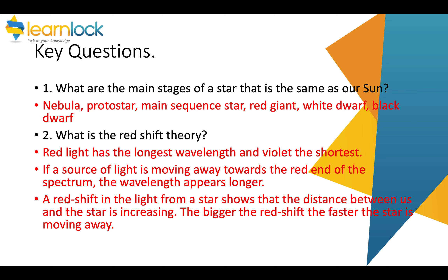What is the red shift theory? Red light has the longest wavelength and violet the shortest — that is in the spectrum. If a source of light like a star is moving away, the wavelength appears longer, shifted towards the red end of the spectrum. The red shift in light from a star shows that the distance between us and the star is increasing. The bigger the red shift, the faster the star is moving away — this supports the theory that the universe is expanding.